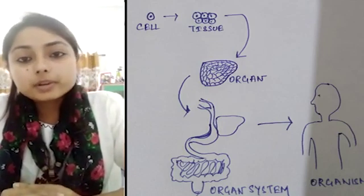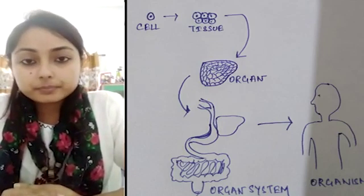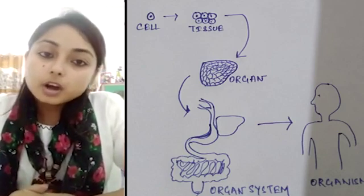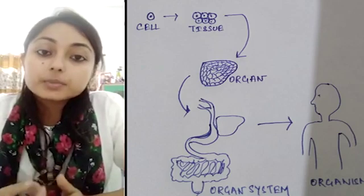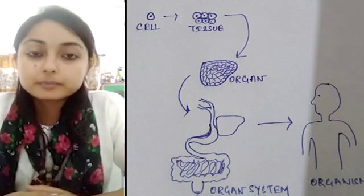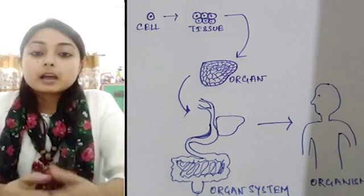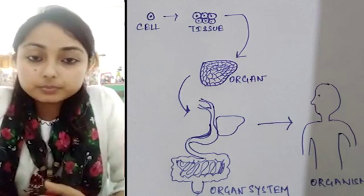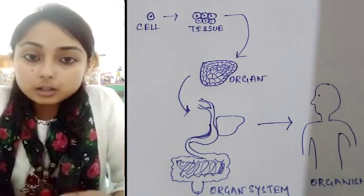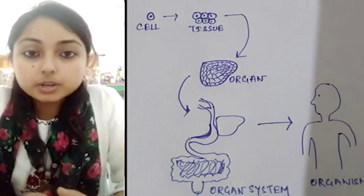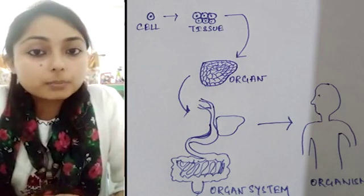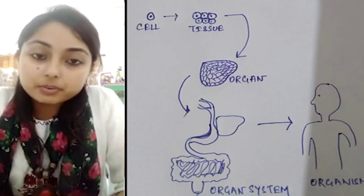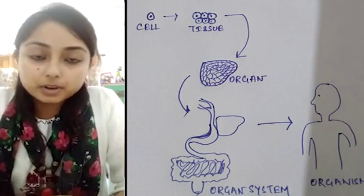We are all made up of cells. When we were being formed inside our mother's womb, we all started our life from a single cell — an egg. A lot of cells come together to form a tissue. Cells performing a similar kind of function come together to form a tissue.